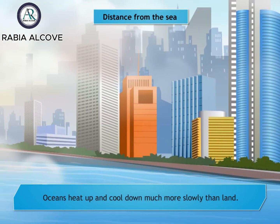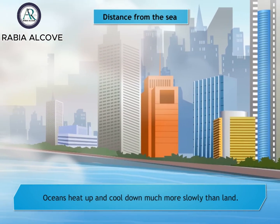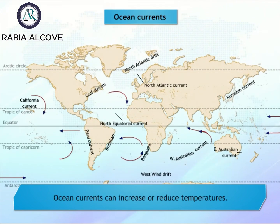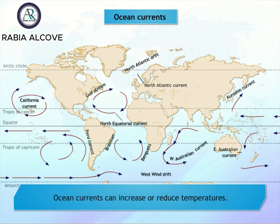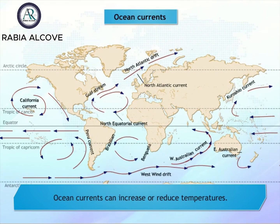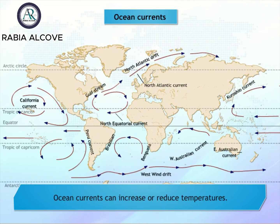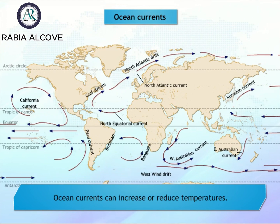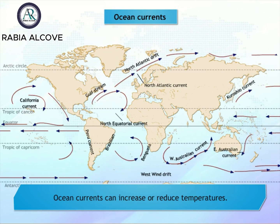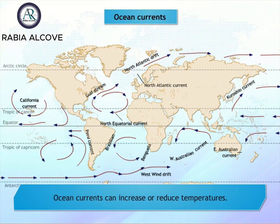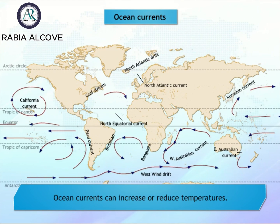Ocean currents can increase or reduce temperatures. Some ocean currents are warm and some are cold. So when a warm ocean current flows close to a place, the climate there would be warm. It would be the opposite in case cold currents flowed.